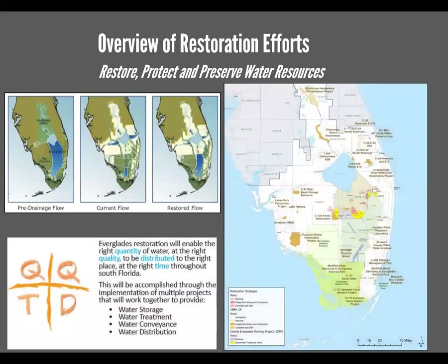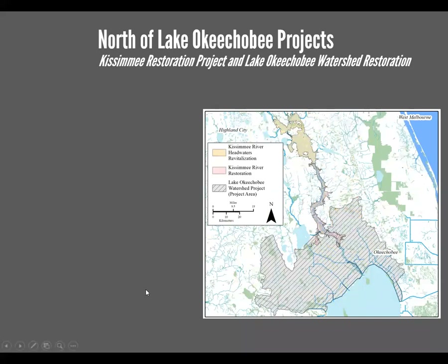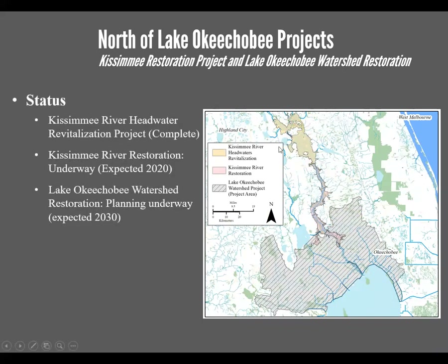Now focusing on some successes and data associated with the Kissimmee River restoration project and Lake Okeechobee, the stormwater treatment areas, and the Caloosahatchee or C-43 River Basin Canal. The Kissimmee River Headwater Revitalization Project is actually complete — it involved improving stormwater management of the lakes up there. If anybody's visited Florida, you probably know of Kissimmee or Orlando, which is in that area.